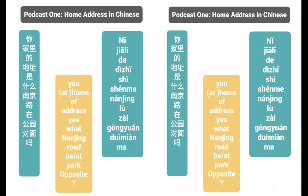So let's look at the park question one more time: 在公园对面吗？ — Is it across from the park? And the answer: 是的 — yes. Very simple. So the person has a nice view of the park. Now let's listen to the dialogue one more time: 你家里的地址是什么？ 我家里的地址是南京路135号。 在公园对面吗？ 是的。